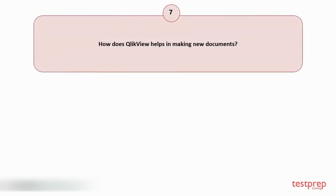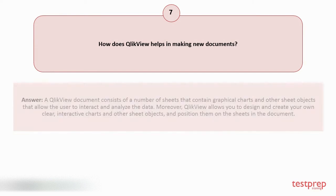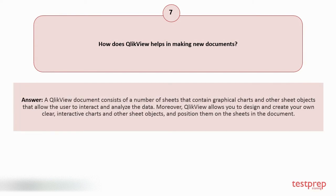Question number 7: How does QlikView help in making new documents? A QlikView document consists of a number of sheets that contain graphical charts and other sheet objects that allow the user to interact and analyze the data. Moreover, QlikView allows you to design and create your own clear, interactive charts and other sheet objects, and position them on the sheets in the document.